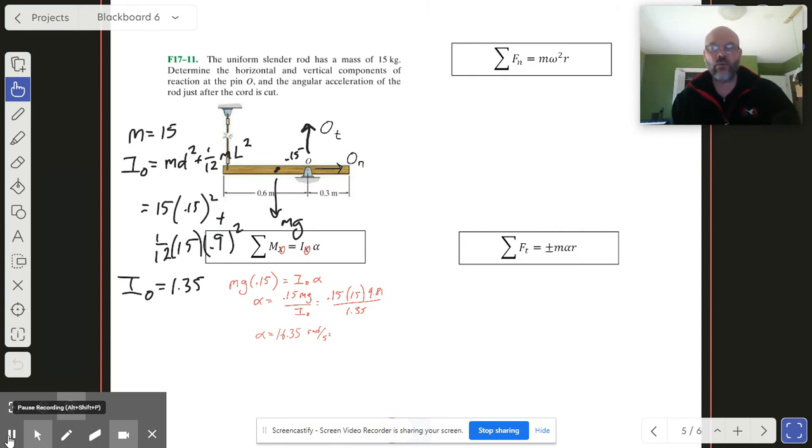Let's move up to our equation with summing the normal forces. So the only normal force we've got is O_n, so that's m omega squared r. And again r is the distance from the point of pivot to the center of mass. But what's omega at this point? Well, it's at rest, omega is 0. So therefore O_n is equal to 0.